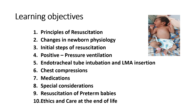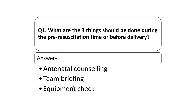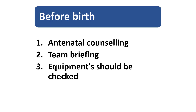This is the NR algorithm. At the top you can see three things we have to do before the birth of the baby. These can also be asked in the viva or in the form of MCQ. The three things that should be done during pre-resuscitation time or before the delivery are: antenatal counseling, assessment of the risk factors, team briefing, and equipment check before birth.